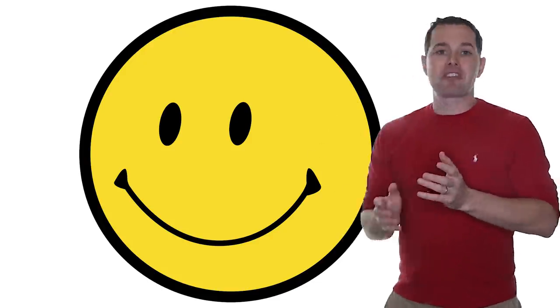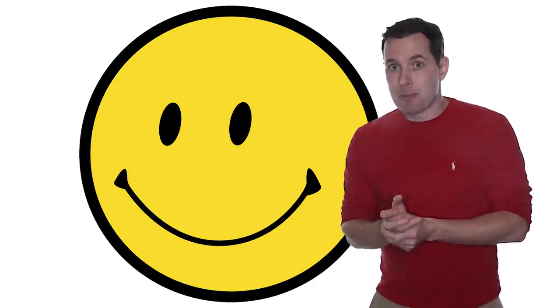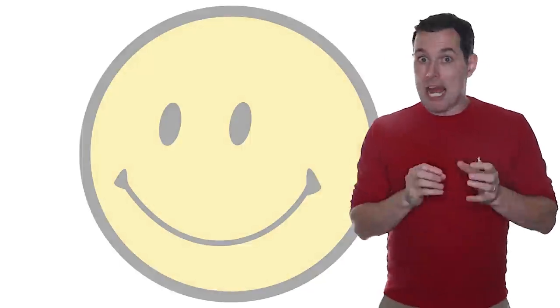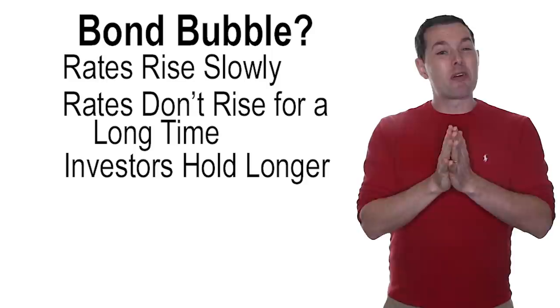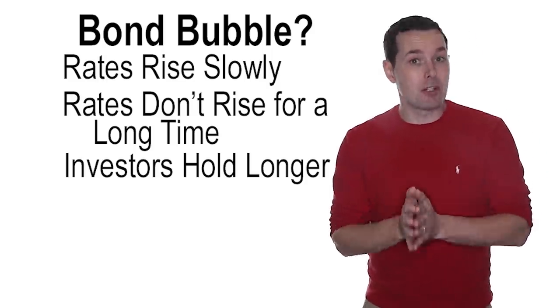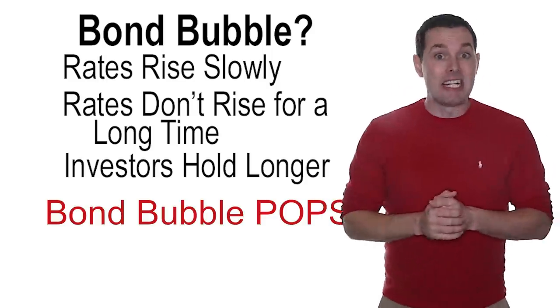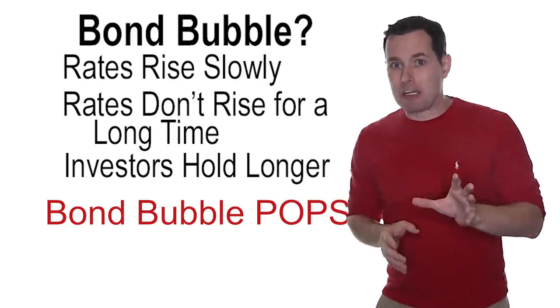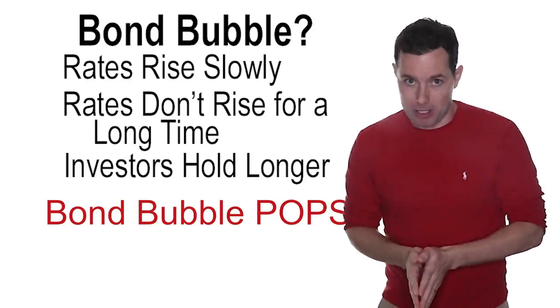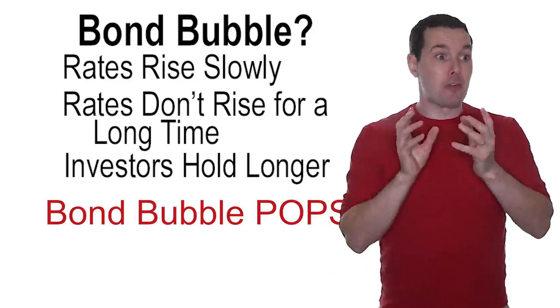I bring out this last part to point out the difference between a potential bond bubble and what a stock bubble could look like. There are going to be some buyers that don't feel the urgency to flee out of the bond market as easily as some flee out of the stock market. So those are a few examples of some scenarios that could prevent a bond bubble from bursting. Of course, option four is that the bond bubble actually does burst.